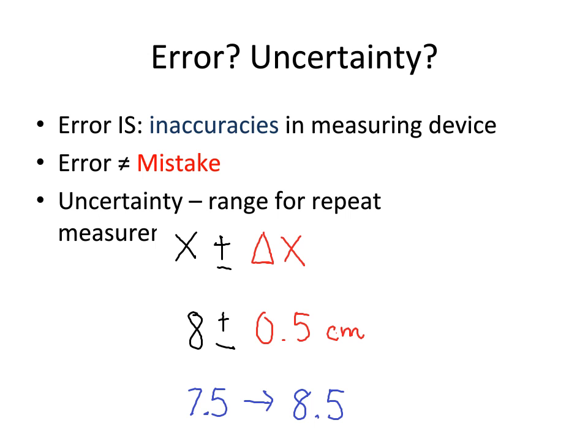So for example, if you're taking a measurement and you're getting 8 centimeters plus or minus 0.5 centimeters, then that means repeat measurements of the same object using the same device, possibly with a different person, could give you a range of values from 7.5 to 8.5 centimeters.